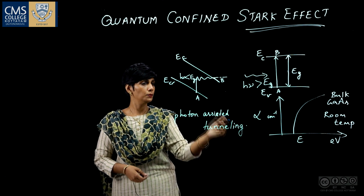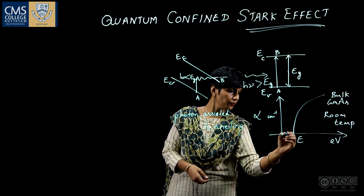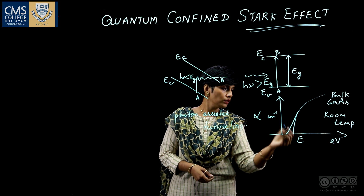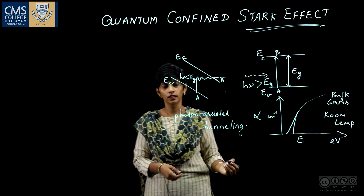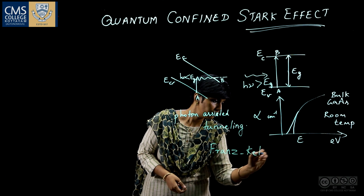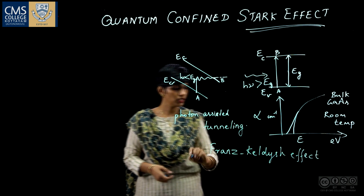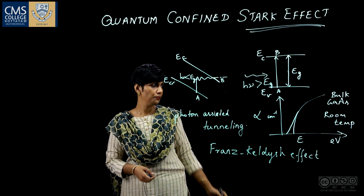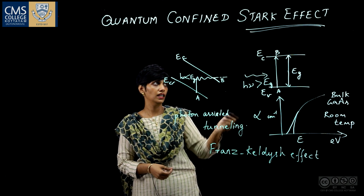So absorption takes place even at lesser energy. In the absorption spectra there is a shift to lower energy — a red shift. This red shift in absorption is called the Franz-Keldysh effect, named after German scientist Walter Franz and Russian scientist Leonid Keldysh. This is the case of electric field in a bulk semiconductor.